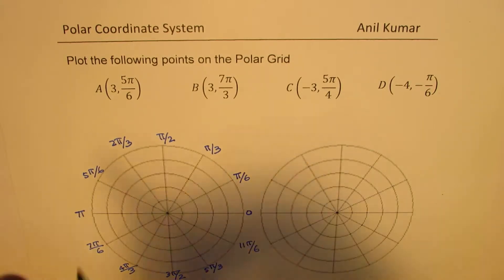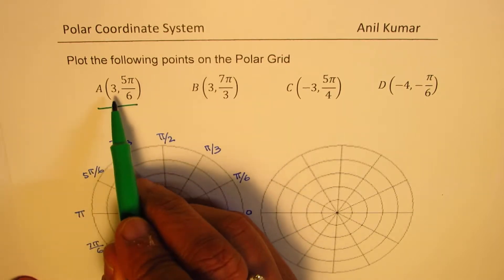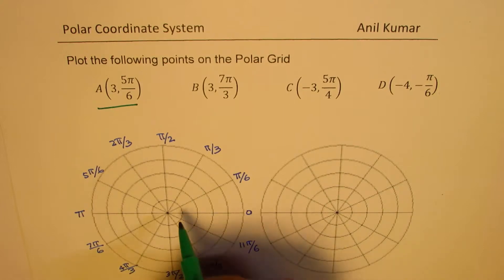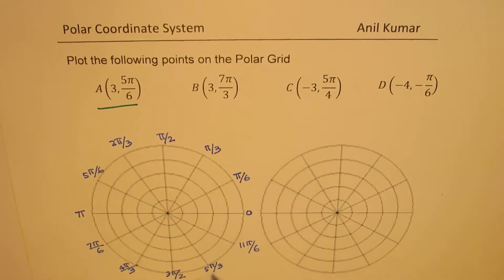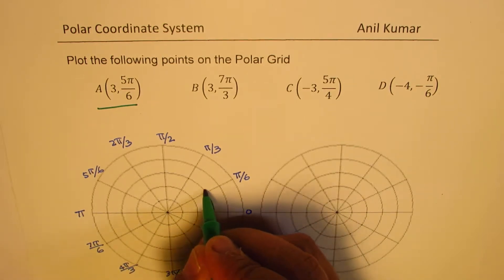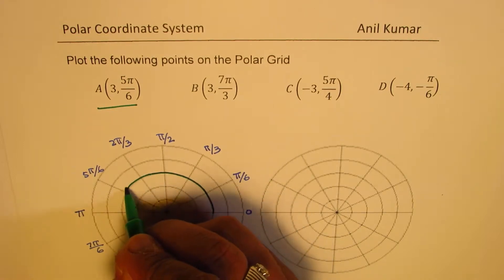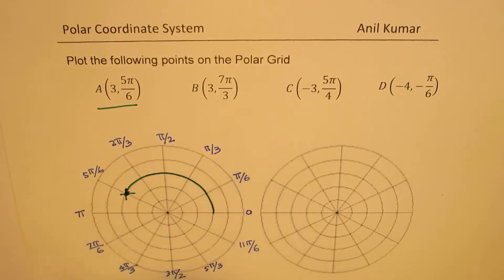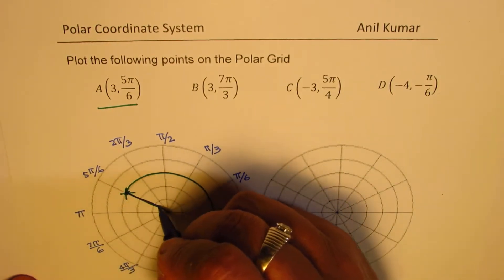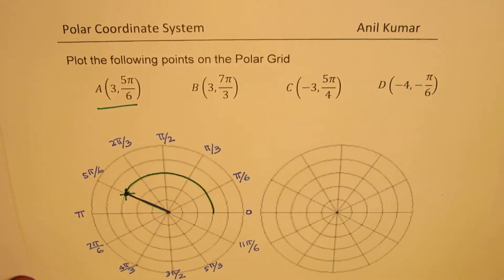Point a is (3, 5π/6). Since the angle is positive, we go all the way to 5π/6 right there, and since r is 3 we go 1, 2, 3 units out. That gives us the position of point a.